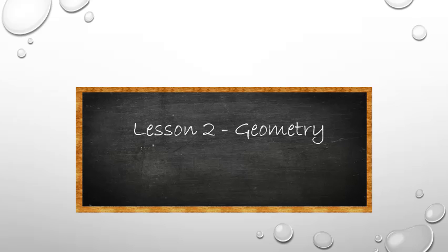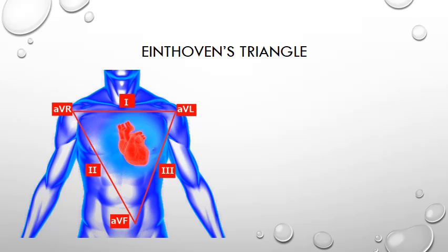So lesson two is about geometry and specifically Einthoven's triangle. Einthoven's triangle looks at the heart in the vertical plane. The electrical impulses received by the limb leads are fed into the ECG machine and from these impulses it produces six individual views of the heart.